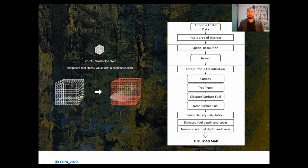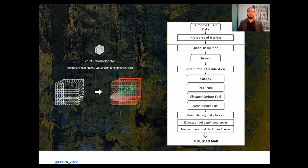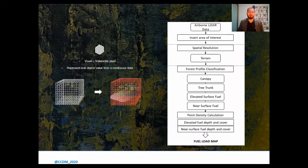The workflow shows our approach for this research. Using airborne LiDAR, we scan the area of interest and determine the spatial resolution. Once the resolution is determined, the forest profile needs to be classified based on canopy, tree trunk, elevated surface fuel, and near surface fuel. After the elevated and near surface fuel were determined, we calculated the point density to understand where the highest vegetation points are located. The outcome of this research is a fuel load map at near surface and elevated fuel levels.